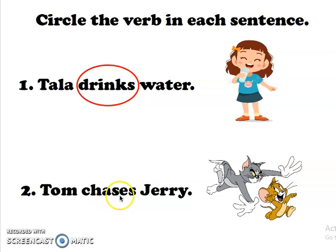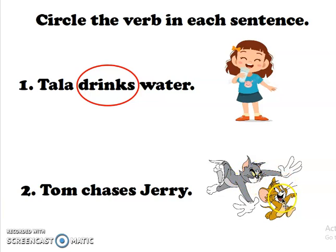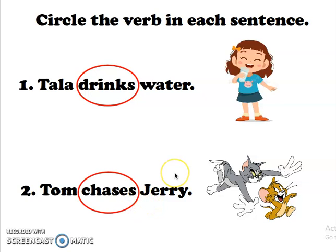Number two — Tom chases Jerry. What is the action that Tom is doing here? He is chasing the mouse. Tom is chasing Jerry. So the verb here is chases. Excellent.